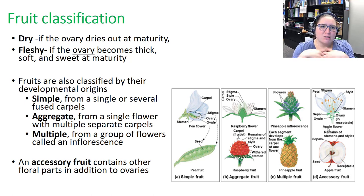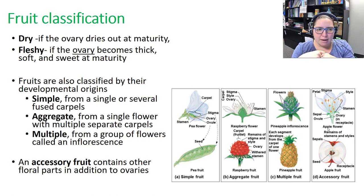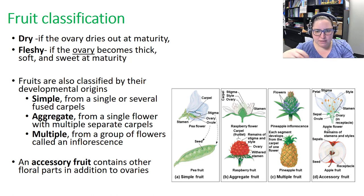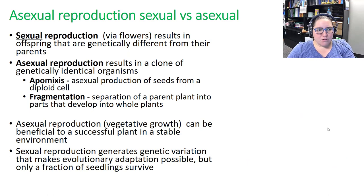For fruit classification: a fruit is dry if the ovary dries out at maturity; it's fleshy if the ovary becomes thick, soft, and sweet. Fruits can be simple (from a single or several fused carpels), aggregate (from a single flower with multiple separate carpels), or multiple (from a group of flowers called an inflorescence). An accessory fruit contains other floral parts in addition to the ovaries.